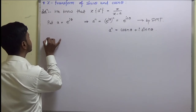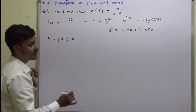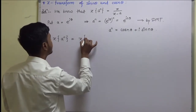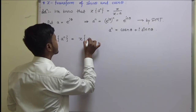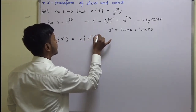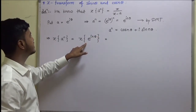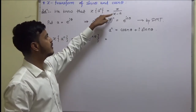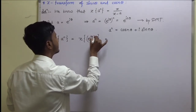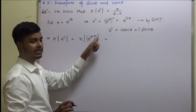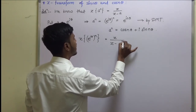Now the Z transform of aⁿ is the same as the Z transform of e to the power inθ. So what should be its transform? Since it is aⁿ, we write Z upon Z minus a, and here a is e to the power iθ, so it becomes Z upon Z minus e to the power iθ.